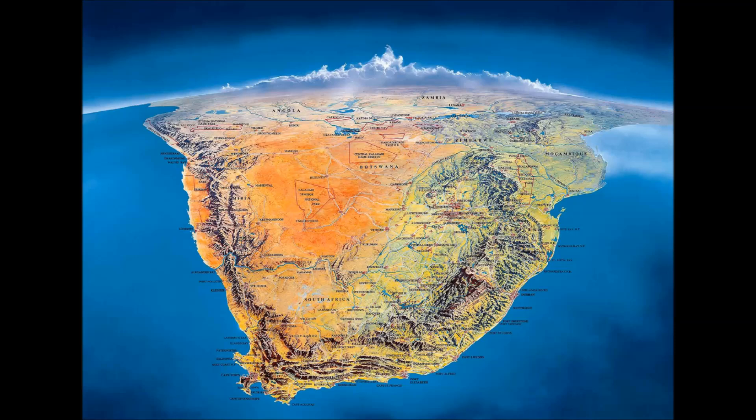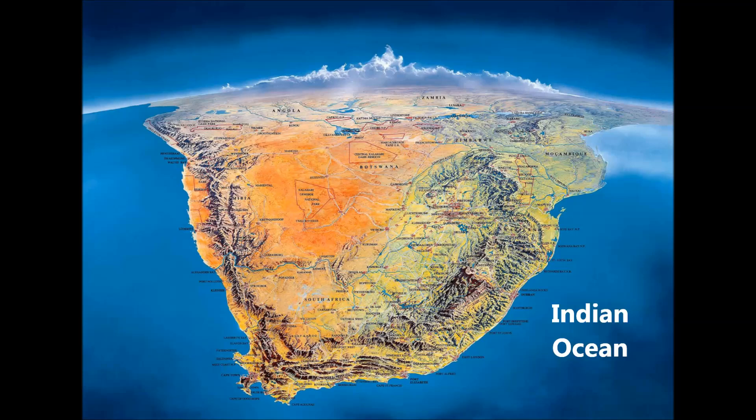To the west of South Africa lies the cold Atlantic Ocean, which influences the climate of the western part of the country. To the east of South Africa lies the warm Indian Ocean, which influences the climate of the eastern part of the country.